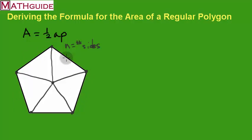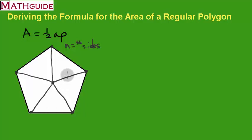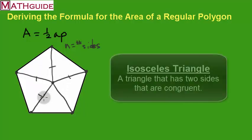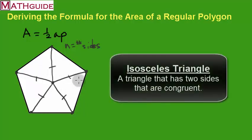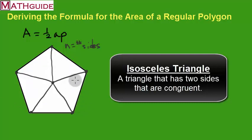Let's say I wanted to calculate the area of this entire polygon. The first thing you do is figure out the area of one isosceles triangle. Since all of the radii are congruent to each other, I'm dealing with a bunch of isosceles triangles. So if I can find the area of one, I'll use that to find the area of the entire polygon.